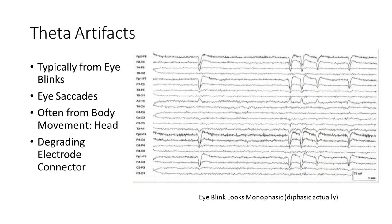You can get theta artifact from eye saccades because eye saccades can move in the theta range. That can be even harder to detect than the alpha. Look for that monophasic appearance in a more upward direction, and it would be continuous.